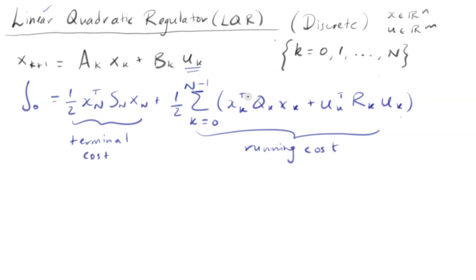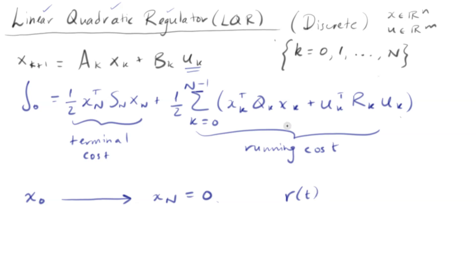Our cost function has two parts: a terminal cost and what is known as the running cost. The whole point is that we want to find the optimal controller — the optimal control sequence u — that minimizes this cost function. And lastly, what does regulator mean? Regulator just means that we have an initial condition x_0 and we want to steer the system to the origin, so x_N equals zero. That is the definition of a regulator — it steers systems to zero. There are also extensions of LQR to tracking problems, where we follow some reference trajectory r(t), but we're just focusing on the regulator here.